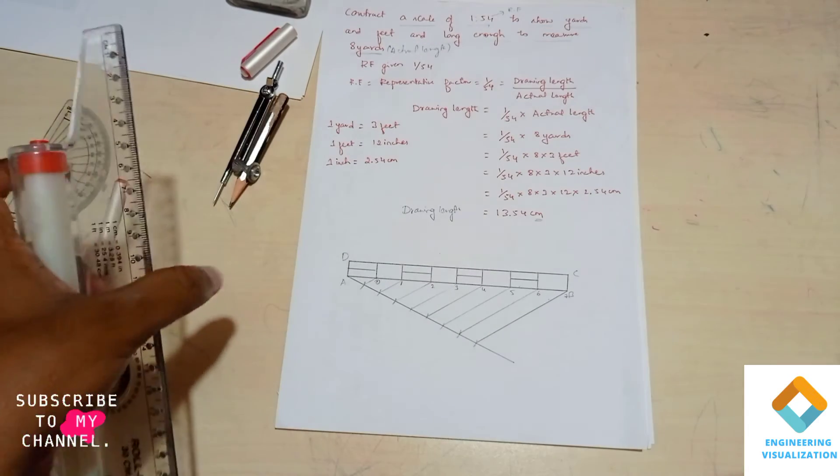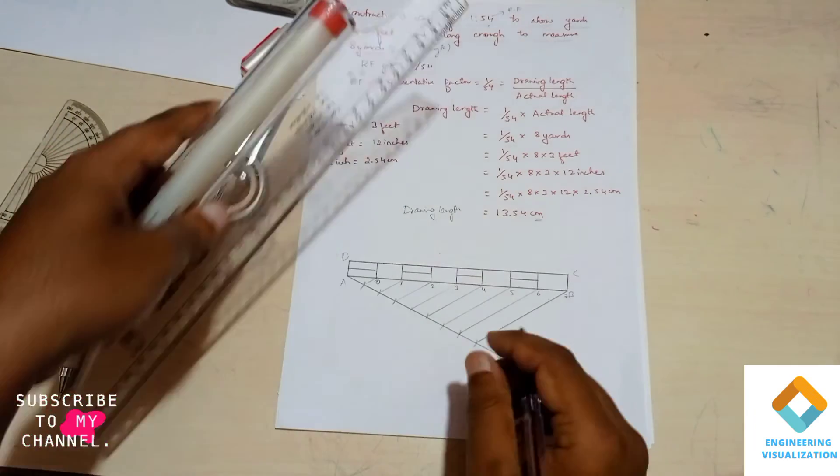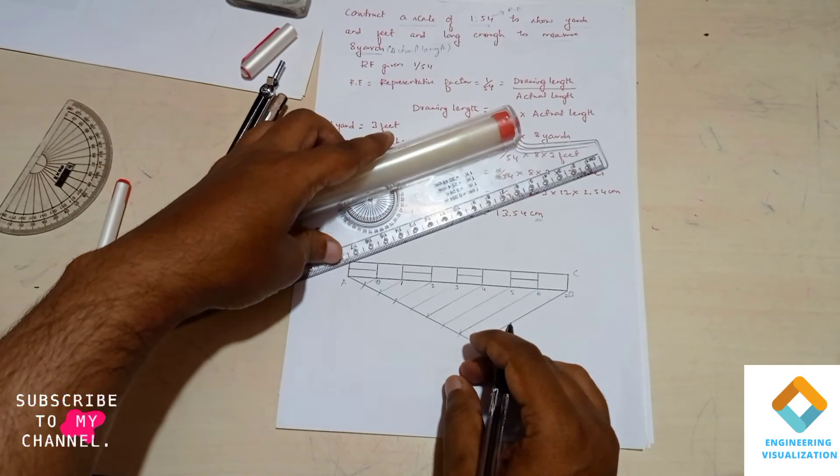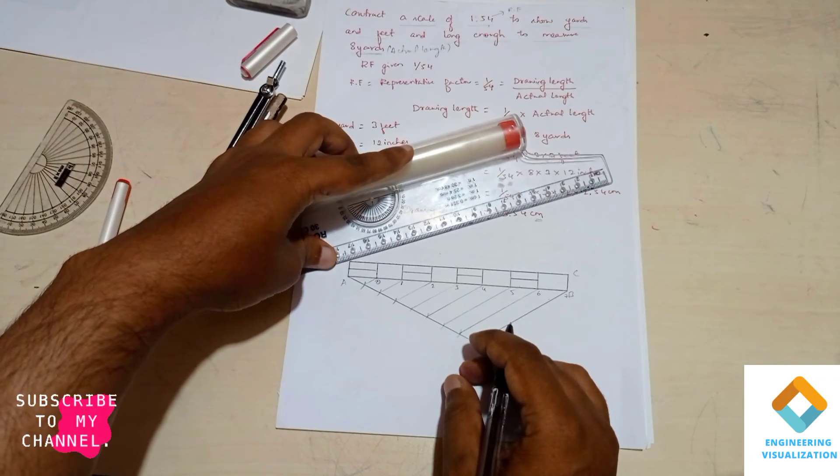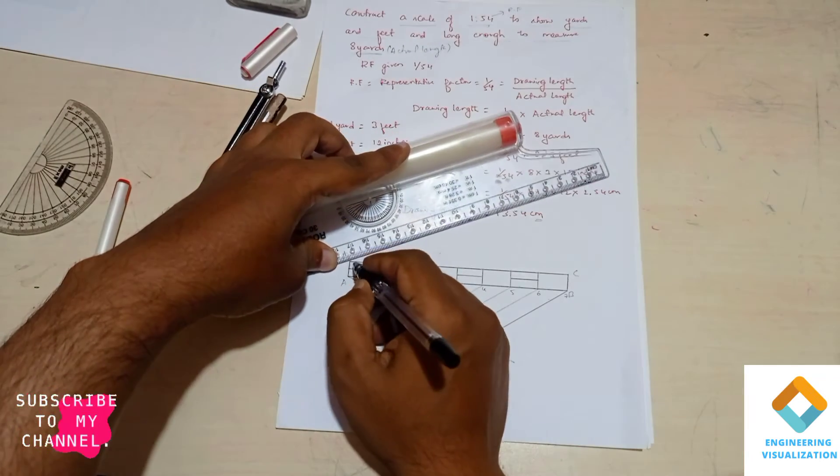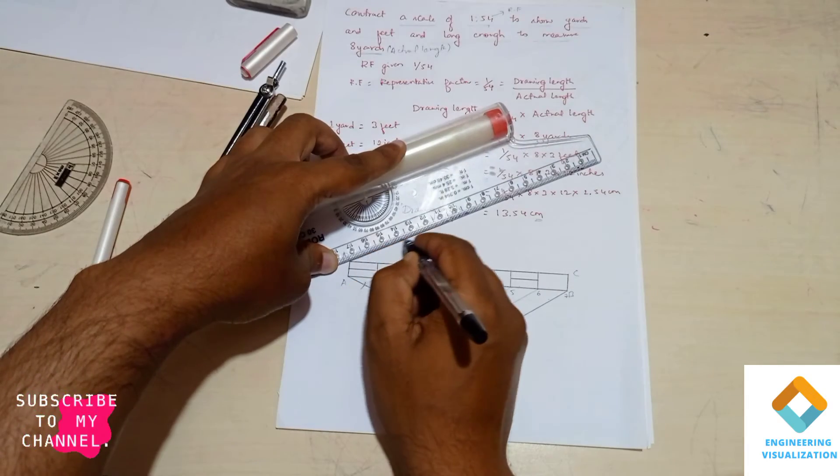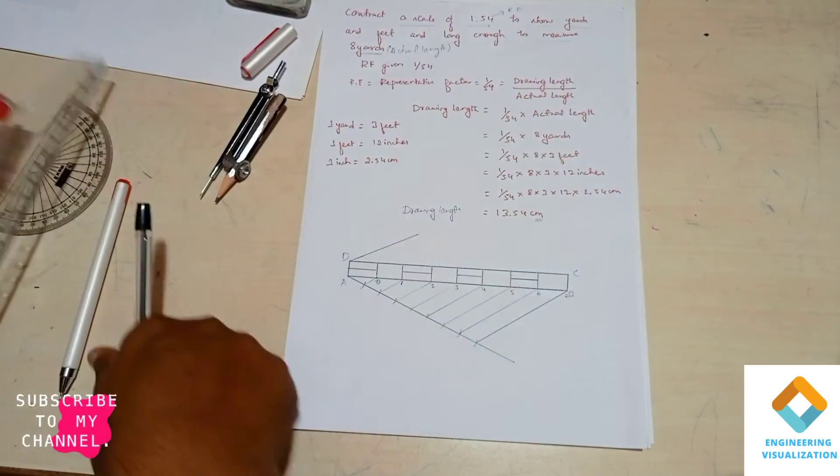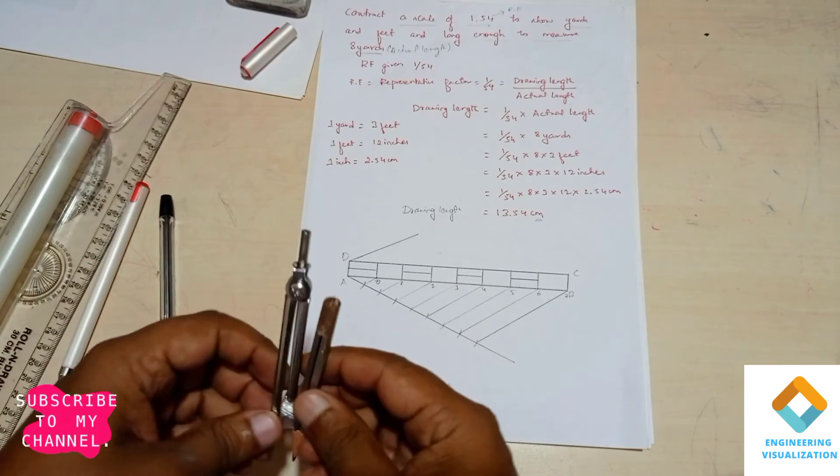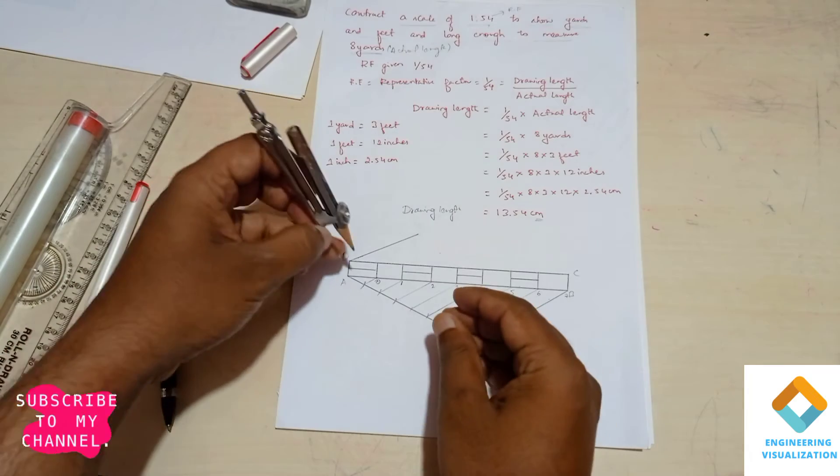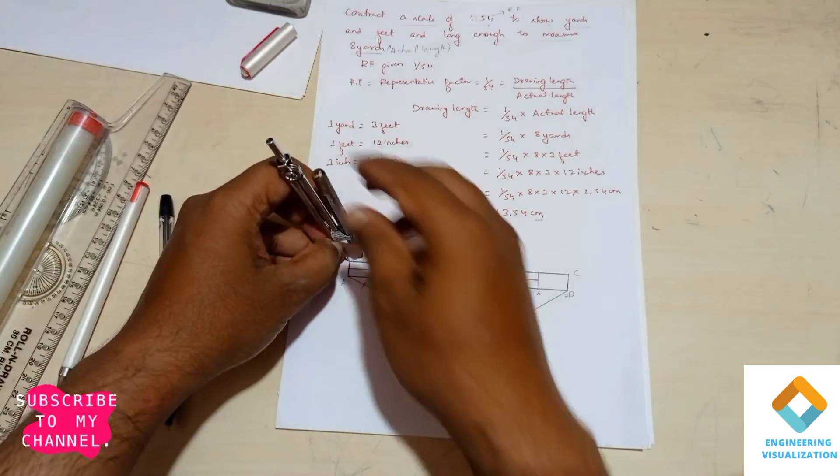Now we need to mark the feet here. We know one yard is equal to three feet. So for that again we have to divide the first box into three equal parts. Again I'm drawing an angle line that should be having angle less than 90 degrees. Again taking compass, I'll cut three equal parts using compass to divide that line into three equal parts.